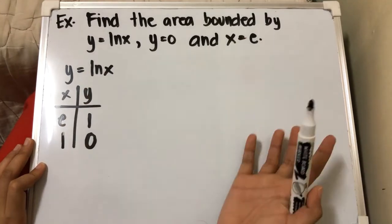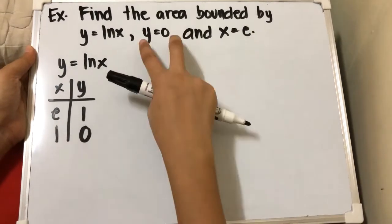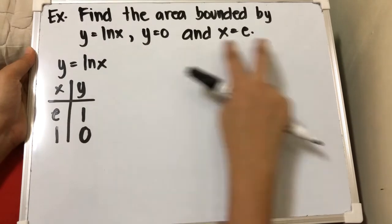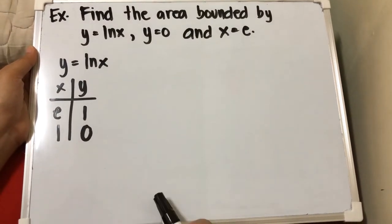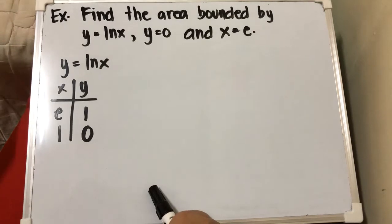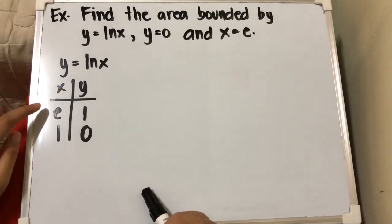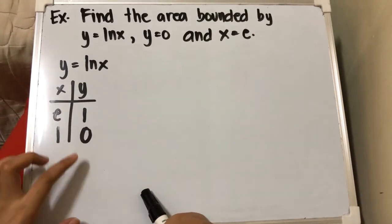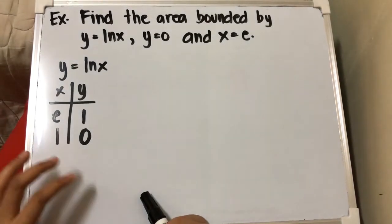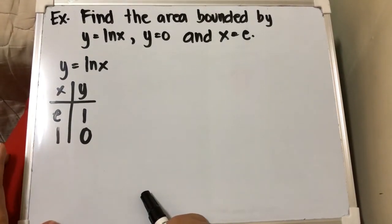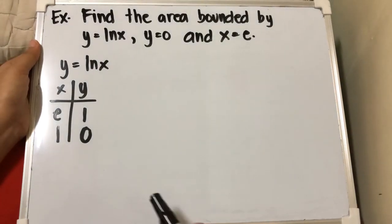The tip here is: what is written in the problem that is given for the boundaries of our area — you can plot that first. So if you already have those values, you can sketch it in our Cartesian plane.